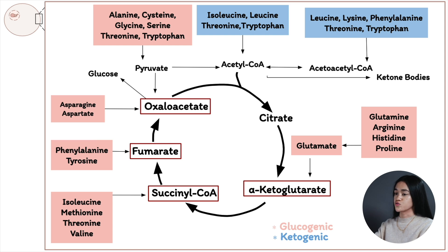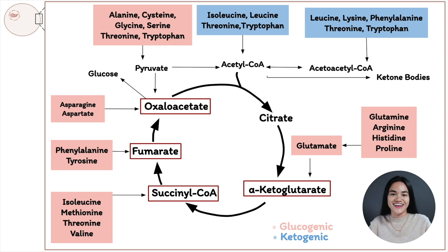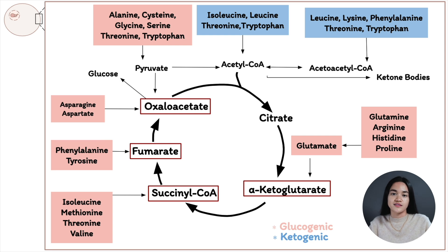So that is amino acid metabolism. In this lecture, we learned the importance of proteins in our diet and how we have three organic fuels: glucose from carbohydrates, fatty acids from fats, and amino acids from proteins. We covered amino acid degradation, including the removal of amino groups via transamination, and how the carbon skeletons derived from amino acid degradation have different fates — entering ketone body formation or the citric acid cycle via alpha-ketoglutarate, succinyl-CoA, fumarate, or oxaloacetate.